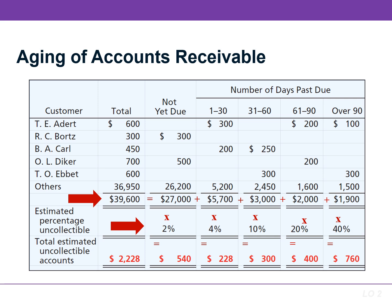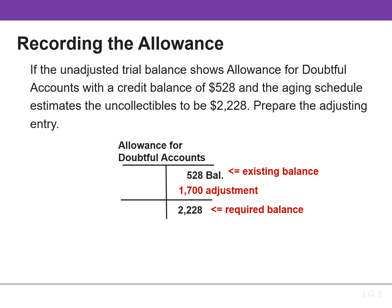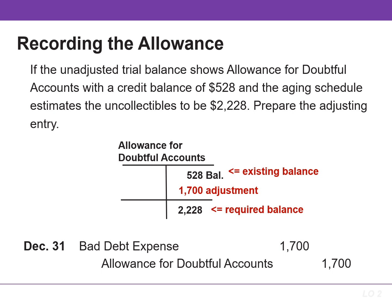Total estimated uncollectable accounts for this company is $2,228. This represents the amount of existing customer accounts that are expected to become uncollectable in the future. It also represents the required balance in the allowance for doubtful accounts. If the unadjusted trial balance shows allowance for doubtful accounts with a credit balance of $528, that represents the existing balance. Since the aging schedule estimated the uncollectables to be $2,228, an adjusting entry for $1,700 — the difference between the required and the existing balance — would result in a debit to bad debt expense and a credit to the allowance for doubtful accounts in the amount of $1,700.